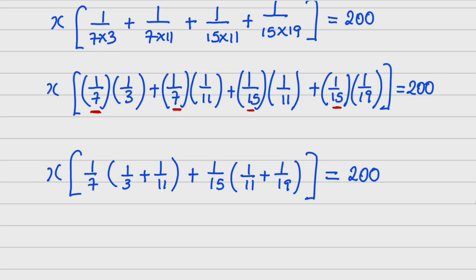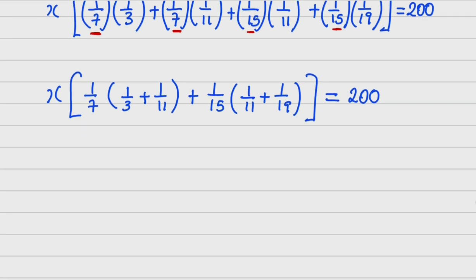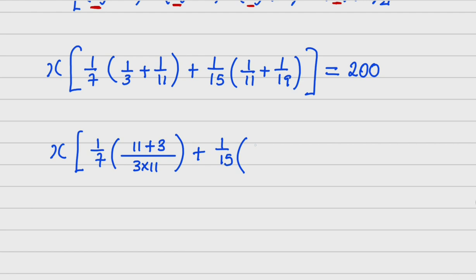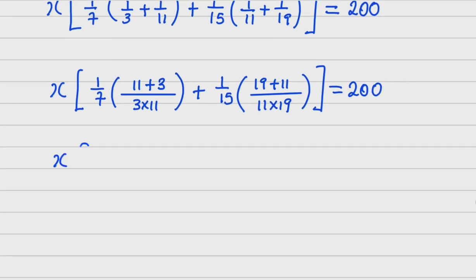Take note that I am working this without using any calculator — just using tricks to make sure everything turns out fine. Now I work out the first bracket: the LCM of 3 and 11 is 3×11, giving (11+3). For the second bracket, the LCM of 11 and 19 is 11×19, giving (19+11). So x equals 200.